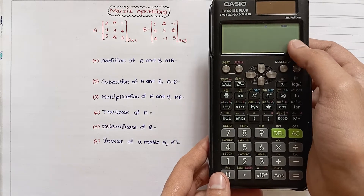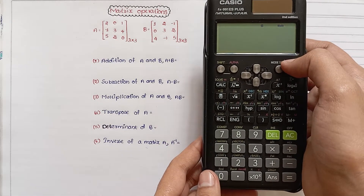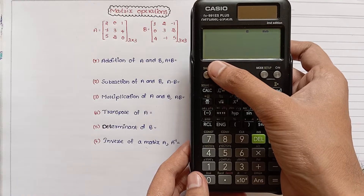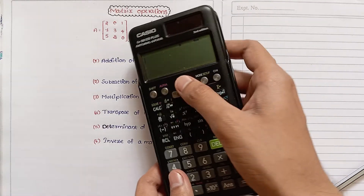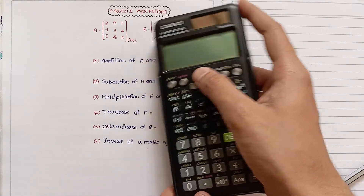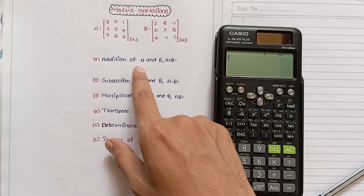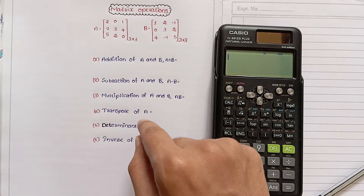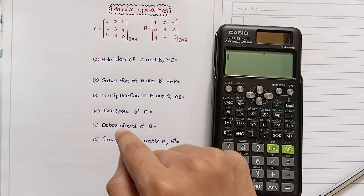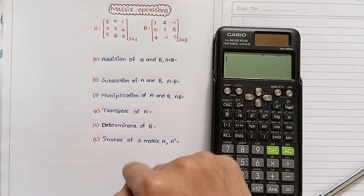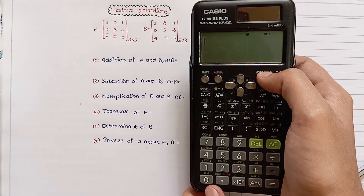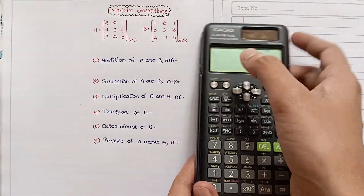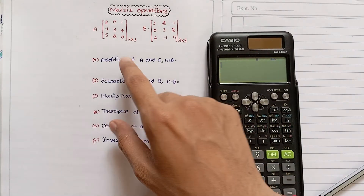Hi friends, welcome to our channel NG Lectures. In this video we will discuss how to perform matrix operations: addition of two matrices, subtraction of two matrices, multiplication, transpose, determinant, and inverse in Casio fx-991es Plus.